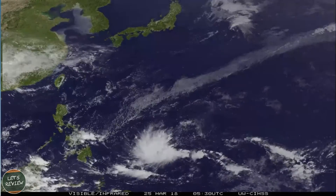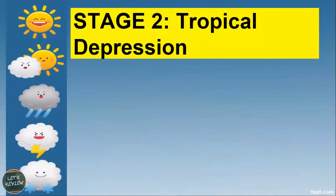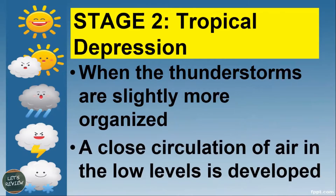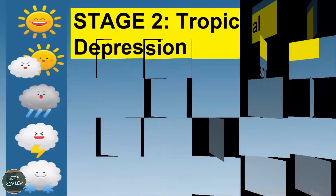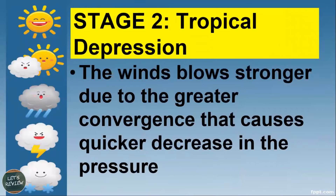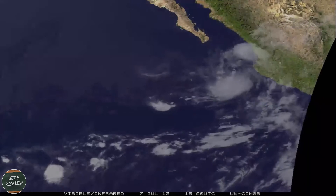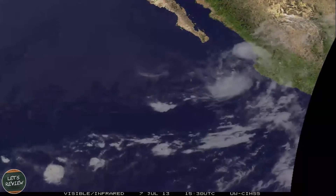Stage two is called tropical depression. The thunderstorms are slightly more organized than the disturbance. A closed circulation of air at the low levels is developed, and the winds flow stronger due to greater convergence, which causes a quicker decrease in pressure, as seen in the satellite video.